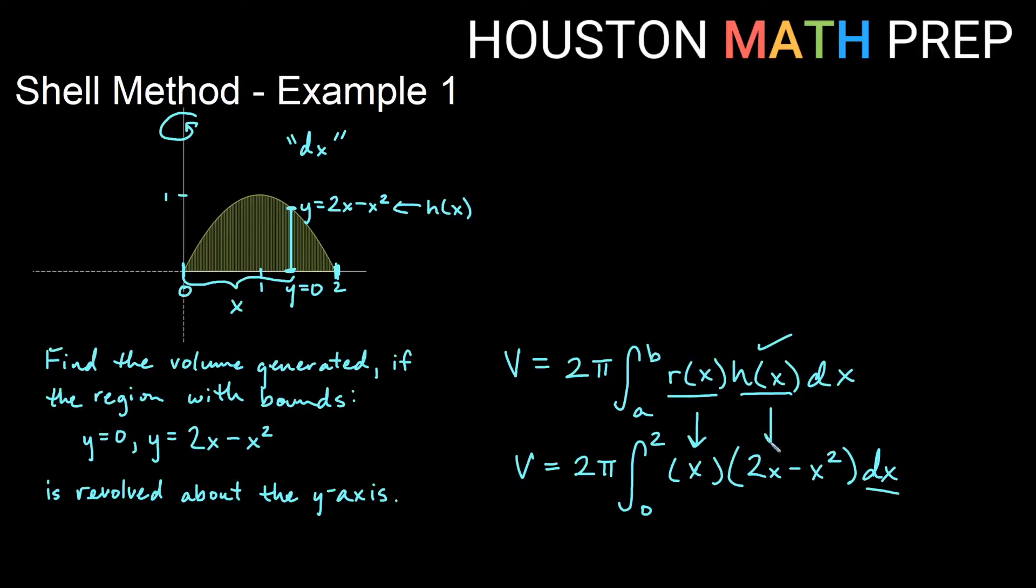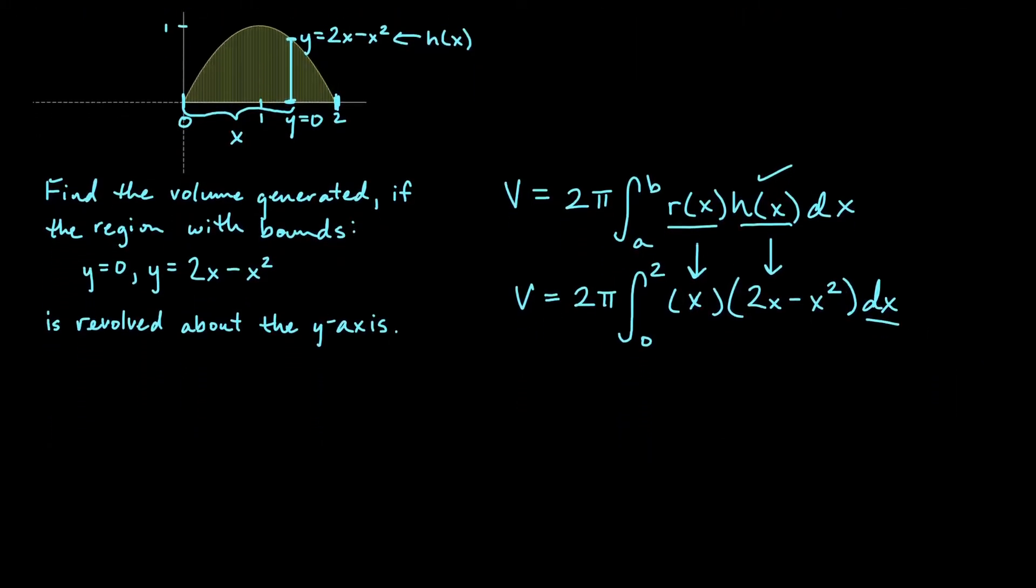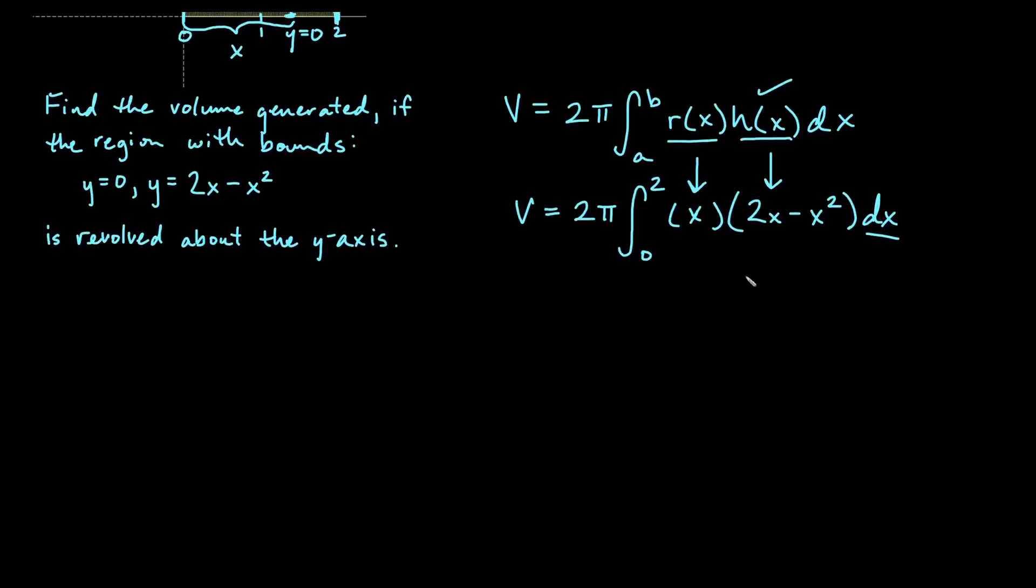Okay, so to do this integral, we won't do anything crazy as far as trying to do some sort of a product rule. What we'll do here is just simply distribute the x. And then everything will work out very nicely. So we'll have 2π integral from 0 to 2. And we will be integrating 2x squared minus x cubed dx. Okay, so just power rules there. Let's go ahead and do that.